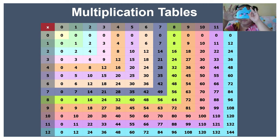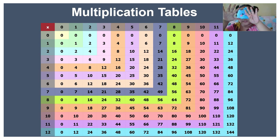10 times 7 equals 70. 10 times 8 equals 80. 10 times 9 equals 90. 10 times 10 equals 100.